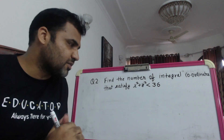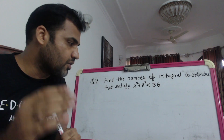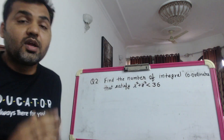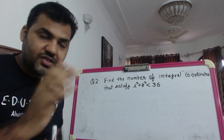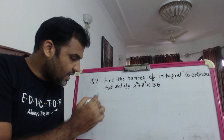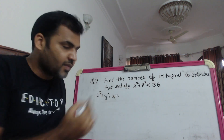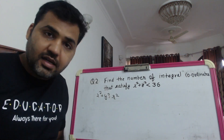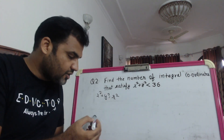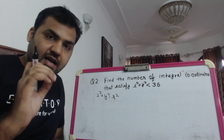The question asks for the number of integral coordinates that satisfy x² + y² < 36. First of all, you should know the basic equation of a circle is x² + y² = r², where r is the radius of the circle and the center of the circle is at (0, 0).